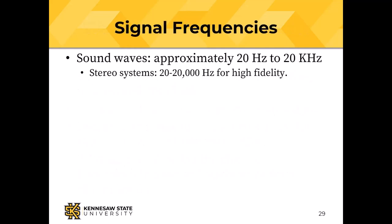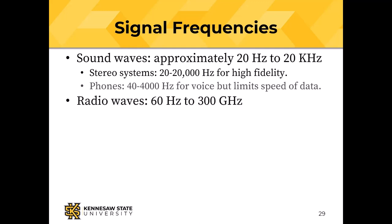Sound waves range from about 20 Hz to 20,000 Hz; stereo systems reproduce this range. About 40 Hz to 4,000 Hz is enough to recognize people's voices — the large percentage of spoken voice frequencies fall in that range. Radio waves run from about 60 Hz (same as the wall socket) to about 300 GHz.